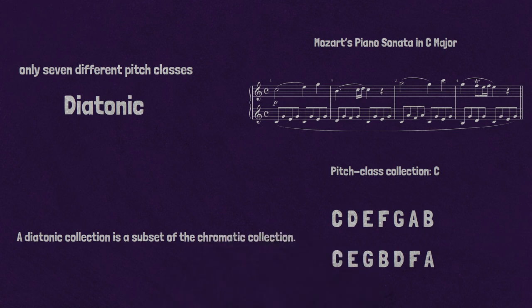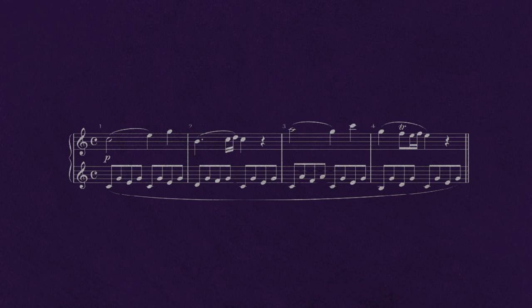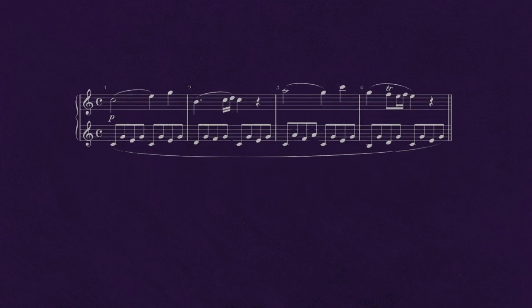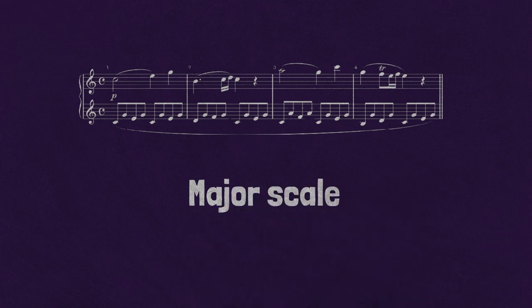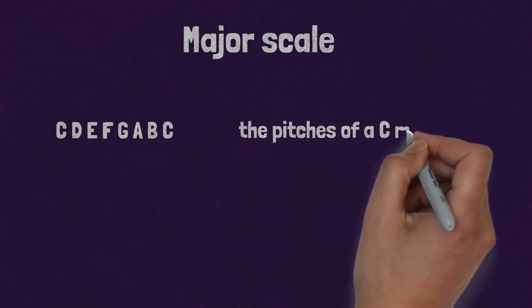Now we are ready to talk about scales. Listen again to the opening of the Mozart Sonata, and sing the pitch that seems to be more stable than the rest. This pitch, C, provides the foundation for a special type of diatonic collection called a major scale. Scales differ from collections in that they are ordered. When you play or sing a scale, there is a beginning pitch and an order to the notes that corresponds to the musical alphabet — in this case, C, D, E, F, G, A, B, C: the pitches of a C major scale.